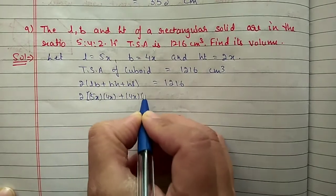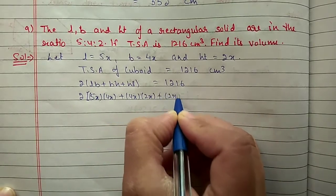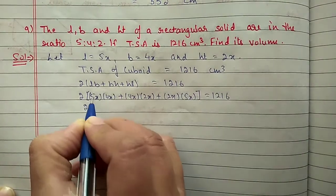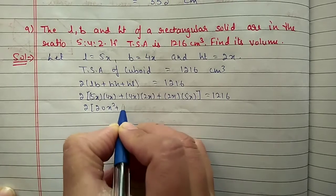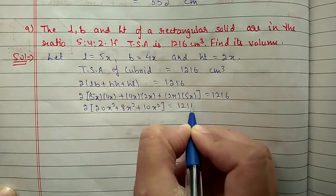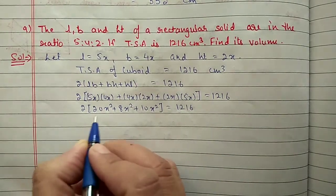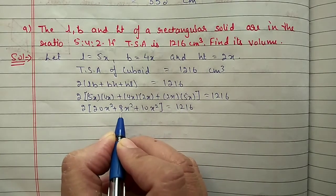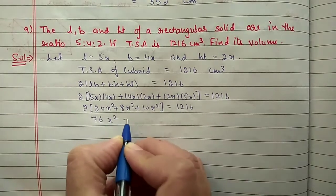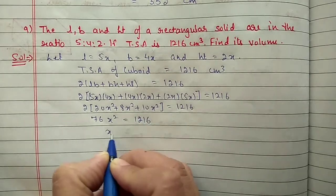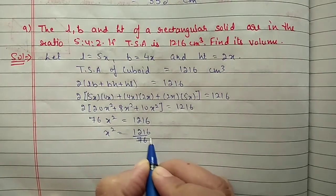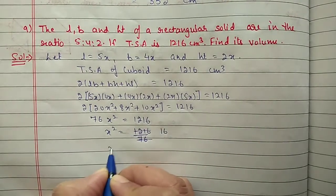Multiplying first: we get 20x² + 8x² + 10x² = 38x². Then 2 into 38x² = 76x² = 1116. So x² = 1116/76 = 16, which we write as 4². Therefore x is equal to 4.